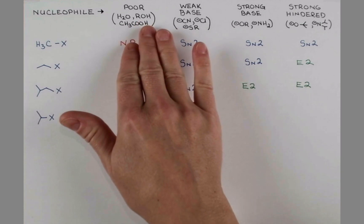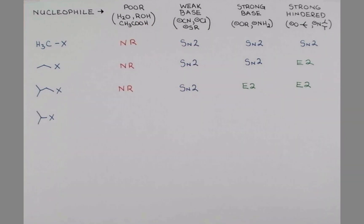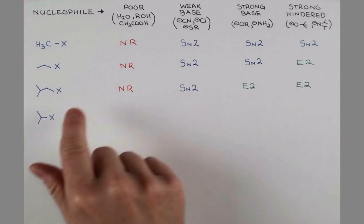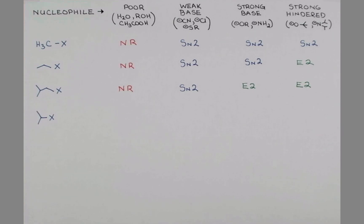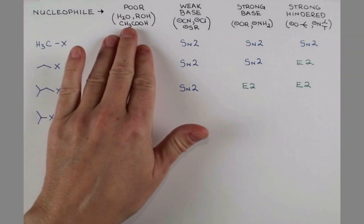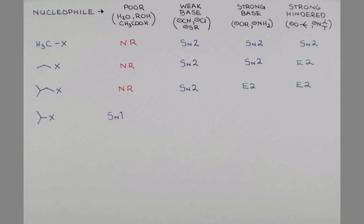The nucleophile isn't strong. It doesn't have a lot of pushing power to push out this group in an SN2 fashion. So under these conditions, we'll just wait around for this to ionize and then the weak nucleophile can add. Now, whenever we're able to form a carbocation, elimination is going to compete. So under these conditions, we'll expect to get some elimination by the E1 mechanism as well.